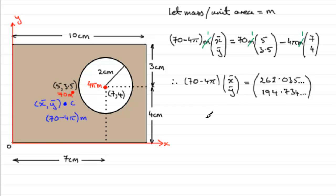All we need to do now is divide each of these values by (70 - 4π), and that will give you x̄, ȳ. If you divide the top one by (70 - 4π), you should find you get 4.562 and so on. And divide 194.734 by (70 - 4π), you end up with 3.390 and so on. So as a coordinate rounded to one decimal place, x̄, ȳ turns out to be (4.6, 3.4). Both those values given to one decimal place.